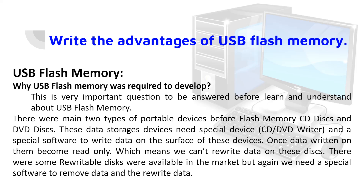Before USB, two major portable devices were used to transfer data: CD disks and DVD disks. These were widely used storage devices. However, they were not reliable. The data storage was limited — for example, floppy disks held only 1.4 MB. Data from a digital camera could not be stored on a floppy disk. The storage capacity was too limited for practical use.